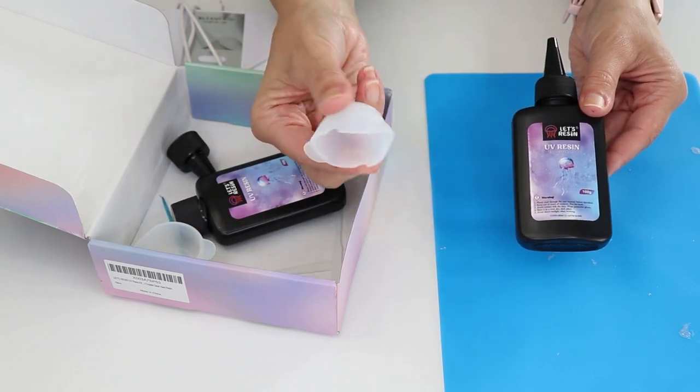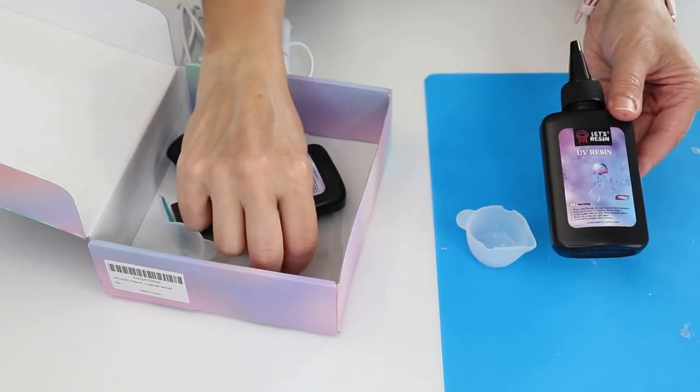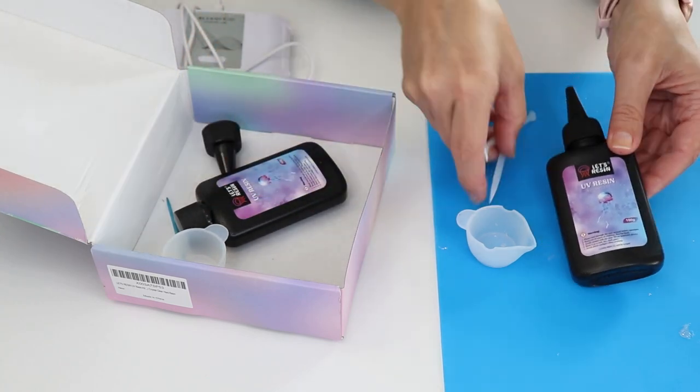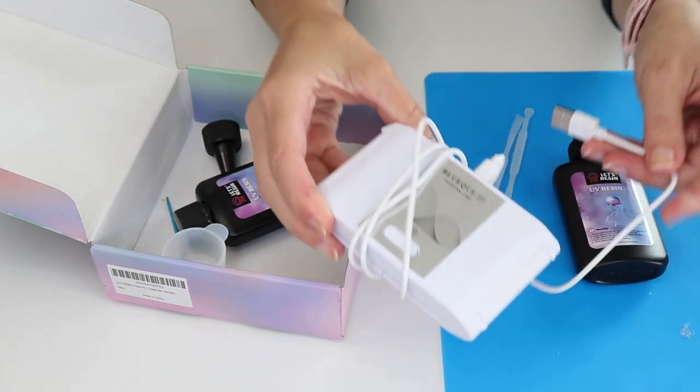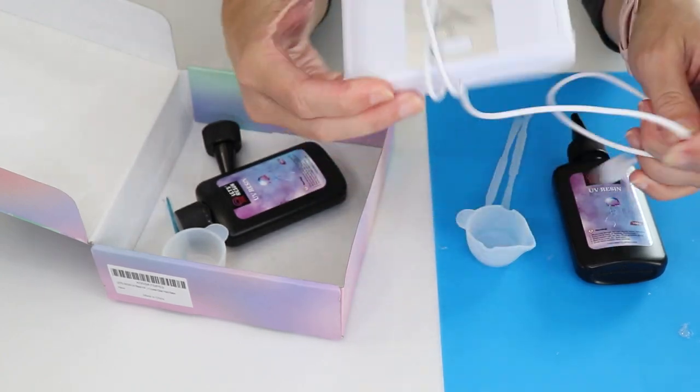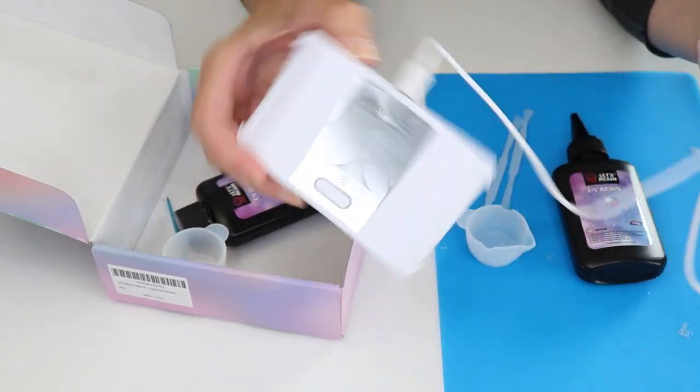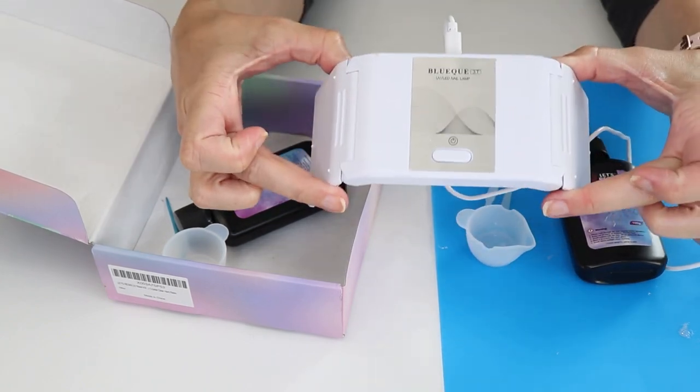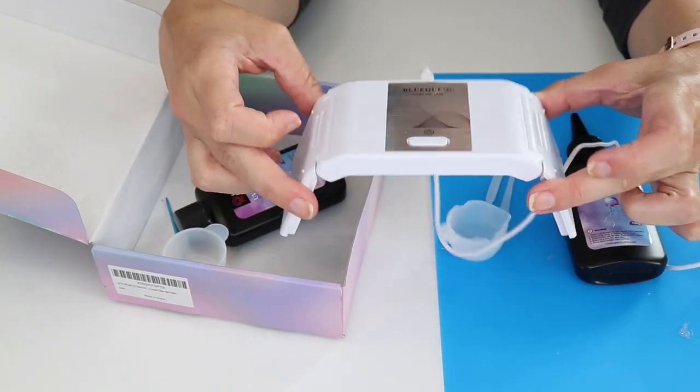Then it comes with some containers, some silicone containers, and then a few mixing tools. The most important part in here is this little UV light. This just plugs in with a USB cord. It sets up and it's going to help go right over the earrings and it's going to cure the resin.